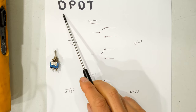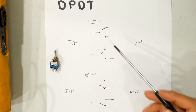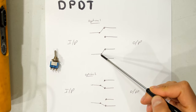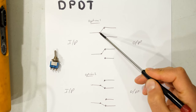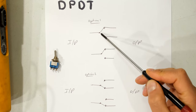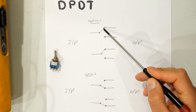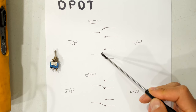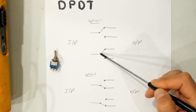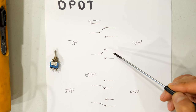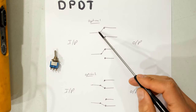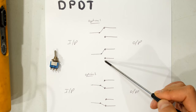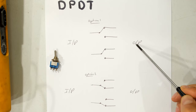The last one is the double pole double throw. We can see there's one pole there and one pole there — that is why it's called a double pole. Each pole has two throws; each pole can throw into two positions. You can throw the link to one position or the other on each pole — so it's double pole double throw. In this case we actually have six connections on the switch: two inputs and four outputs.